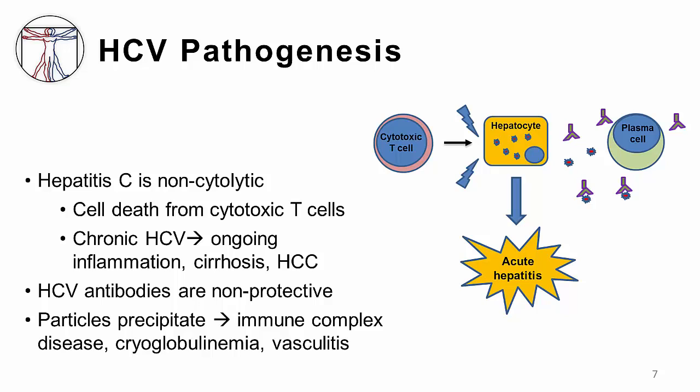Similar to hepatitis B, hepatitis C is non-cytolytic — it does not directly cause hepatocyte cell death. Instead, cell death results from cytotoxic T-cell mediated lysis. In cases where the infection becomes chronic, ongoing inflammation in the liver can lead to cirrhosis and hepatocellular carcinoma. Unlike hepatitis B, the antibodies to hepatitis C do not offer any immunity against the virus.